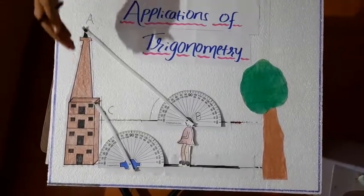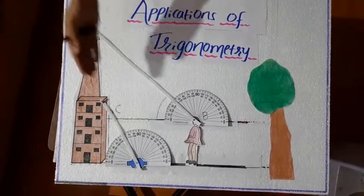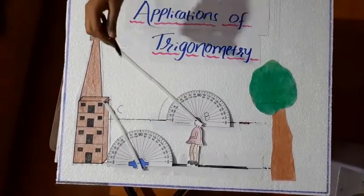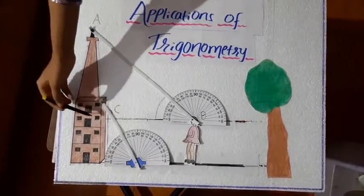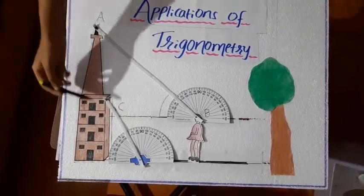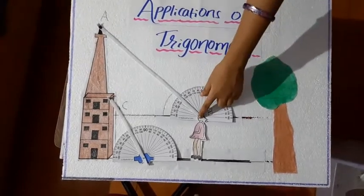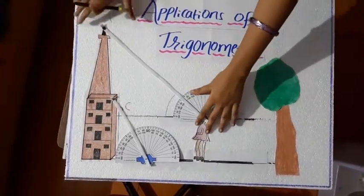We understood that how to find height when the distance and angle of elevation is already known. Now, I would like to tell you another thing. Here, we have taken this height that is AC and she is standing here. So, let us move this.